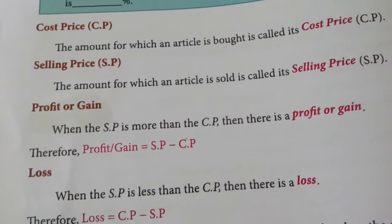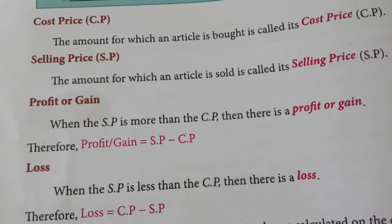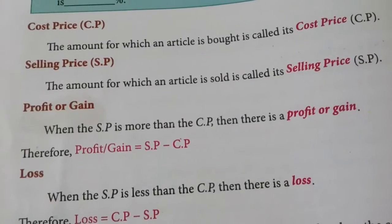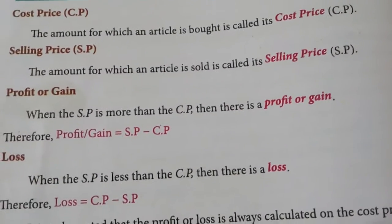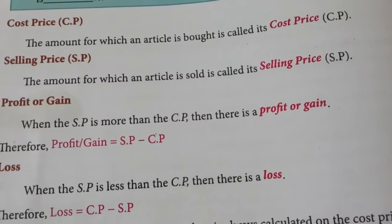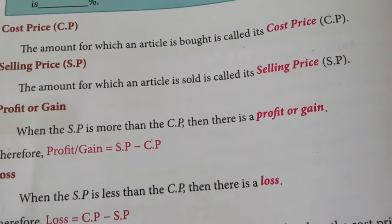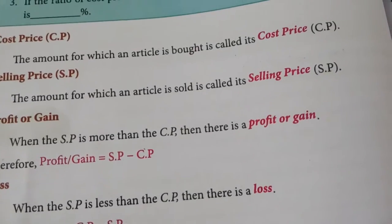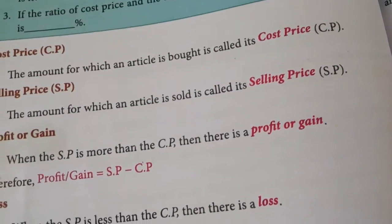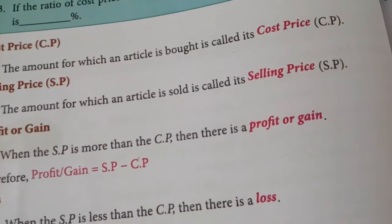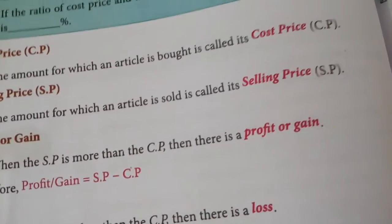Now, when will you get a profit? When the SP is more than the CP, there is a profit or gain. That means when your selling price is more than your cost price, it is a profit. If you purchased a TV and you are selling it to someone else for more than the amount you bought it with, then you will get a profit.